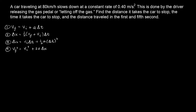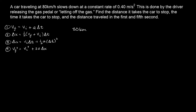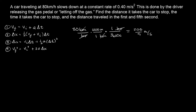So we've got to convert that right off the bat. We take the 80 kilometers per hour and make a relationship between kilometers per hour and meters per second. One kilometer is 1,000 meters, and there are 3,600 seconds in one hour. The hours and kilometers cancel, giving us 200 over 9 meters per second, which is approximately 22.222 meters per second. This is going to be our V initial.